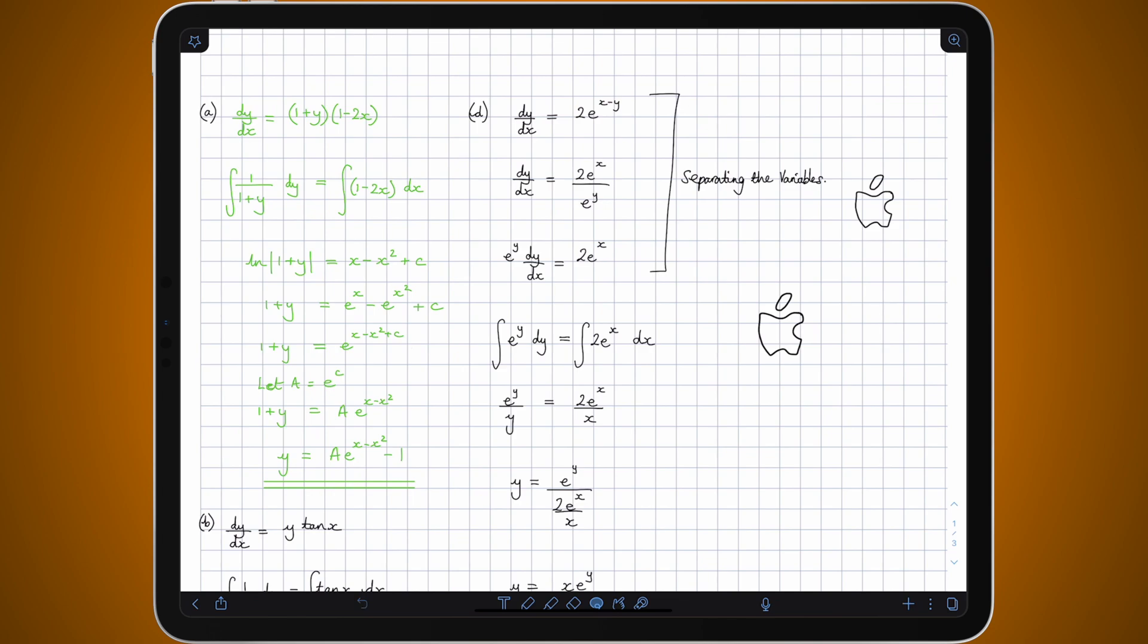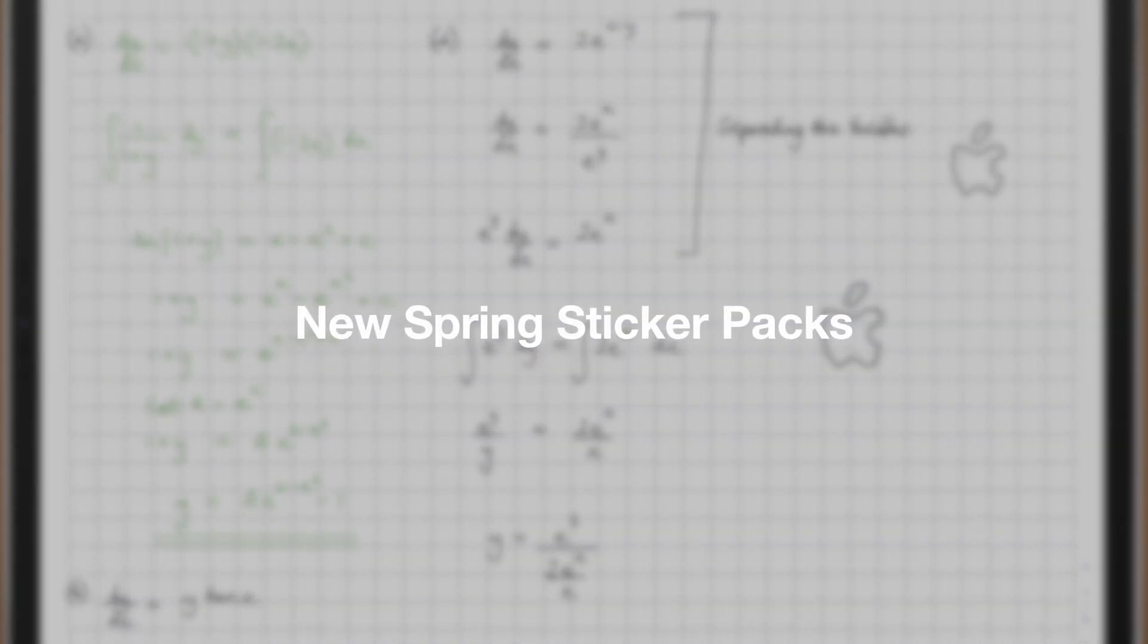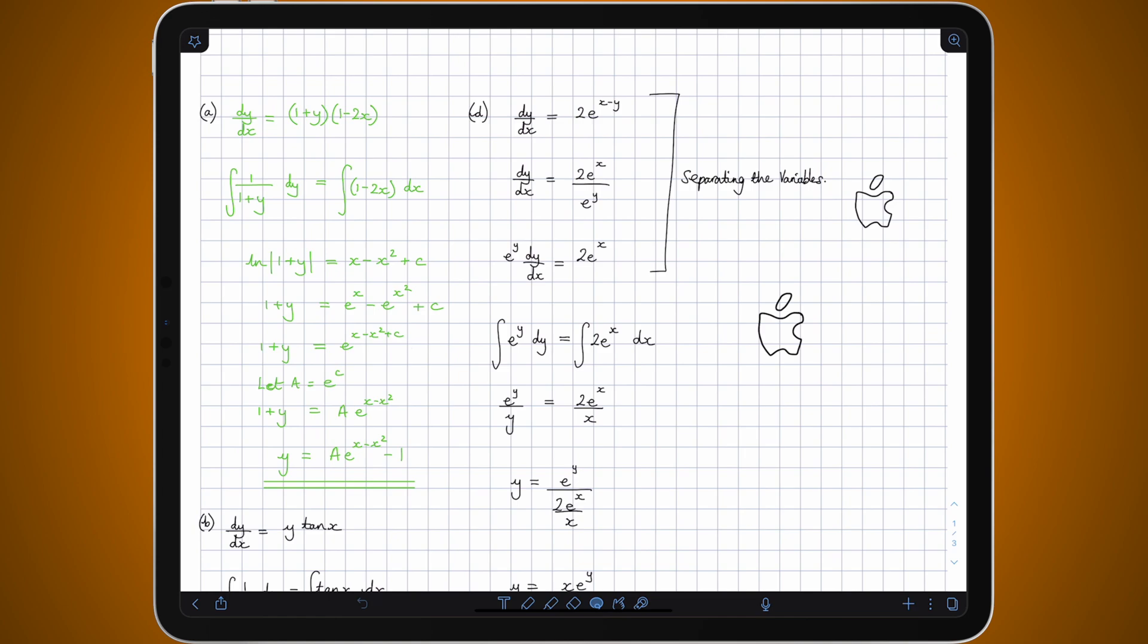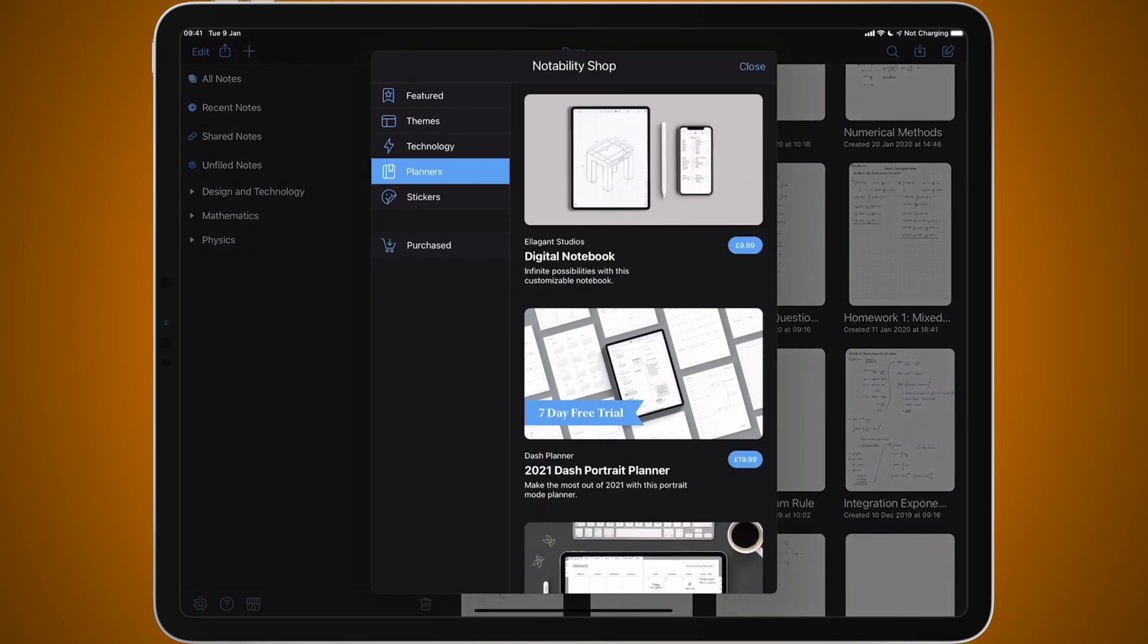Now there is one last thing which is quite a minor one but it might be something that is important to some people, which is some new sticker packs. So if I go back to the main note picker and visit the Notability Store which is in the bottom left corner of the screen, you can see if I go to stickers we have some new spring themed sticker packs.